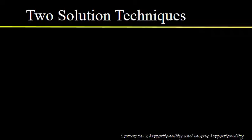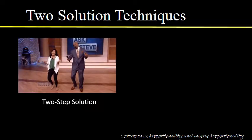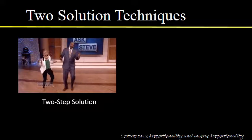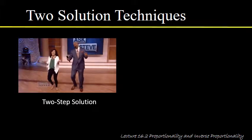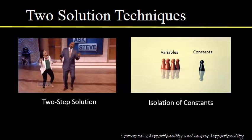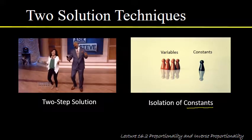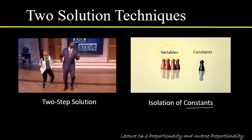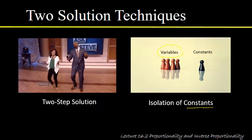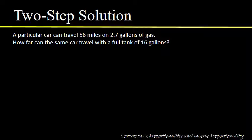We're going to look at two ways to solve these problems. The first is the two-step solution — it takes two steps but each is simple. The second is isolation of constants, where we put all constants on one side and all variables on the other. Let's do the two-step solution first.